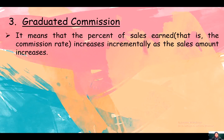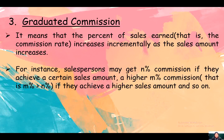It means that the percent of sales earned — that is the commission rate — increases incrementally as the sales amount increases. Take note: it increases incrementally as the sales amount increases. For instance, a salesperson may get N percent commission if they achieve a certain sales amount, and a higher M percent commission — where M percent is greater than N percent — if they achieve a higher sales amount, and so on.